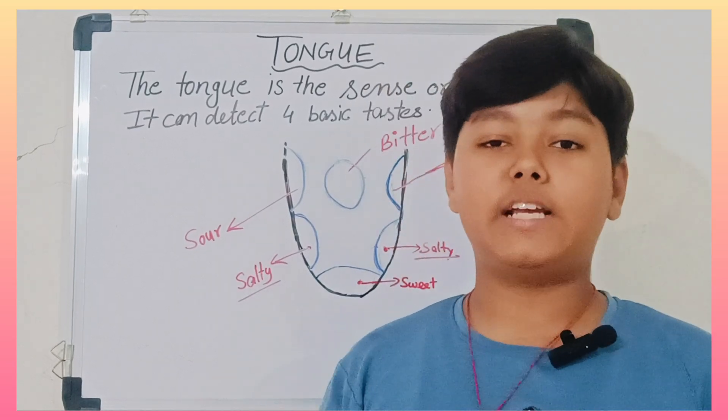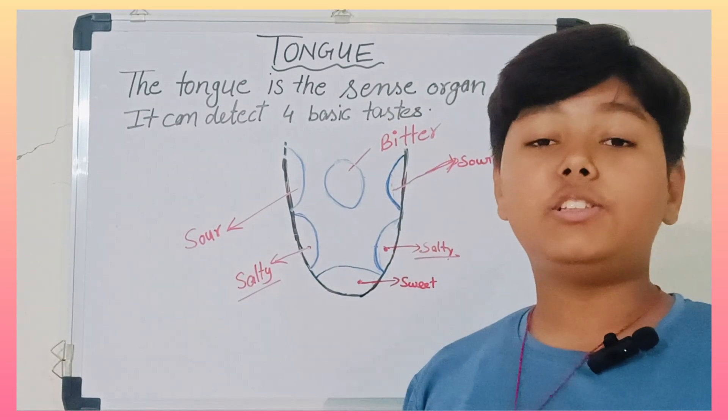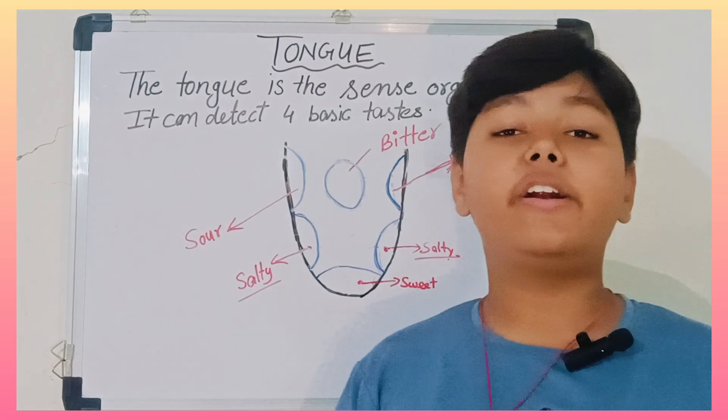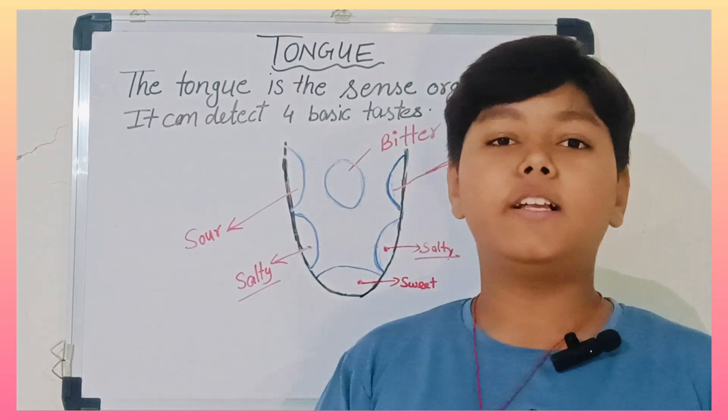Tongue has a special kind of cell tissues which are called taste buds. In different areas, different taste buds are located.